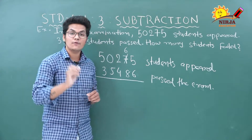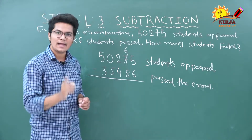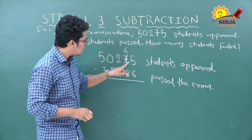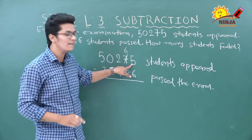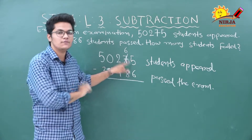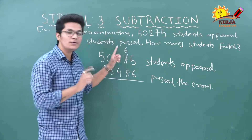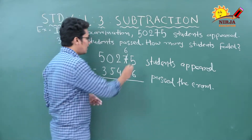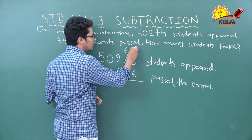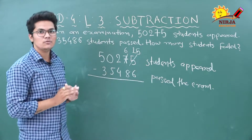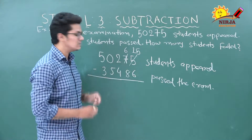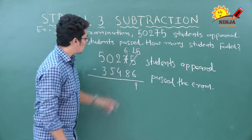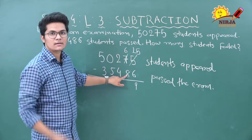One ten equals ten ones. There are already 5 ones, so borrowed 10 ones plus 5 ones gives us 15 ones. Now we can subtract: 15 minus 6 equals 9. Moving to the tens column: 6 minus 8 is not possible, so we borrow from the hundreds column.